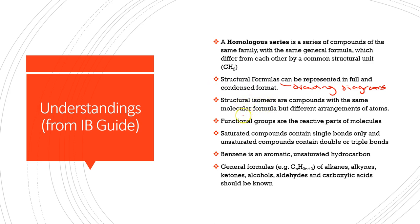We'll cover structural isomers, which are different variations of the same molecular formula. We'll look at functional groups, saturated compounds that contain single bonds only — which is the first family of hydrocarbons we'll be introduced to — and then unsaturated compounds. We'll also take a deep look at benzene in terms of its special structure, what it means for organic chemistry, and how it reacts. For all of these we need to know general formulas, specific examples, and how to name each family.